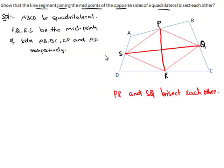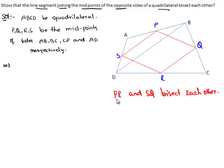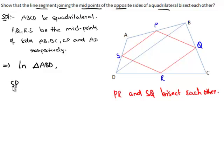Let's come back to our question. Our aim is to prove that PR and SQ bisect each other. To prove this, we draw diagonal BD. This gives us two triangles. In triangle ABD, P and S are the midpoints of sides AB and AD respectively, so from the midpoint theorem, SP is parallel to BD and the length of SP is equal to half of BD. In triangle BCD, Q and R are the midpoints of two sides, so QR is parallel to BD and QR is equal to half of BD. Therefore SP is equal to QR.